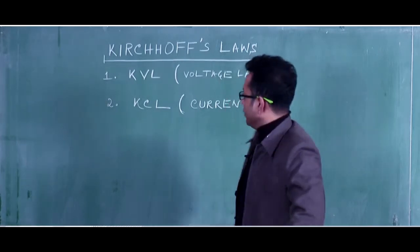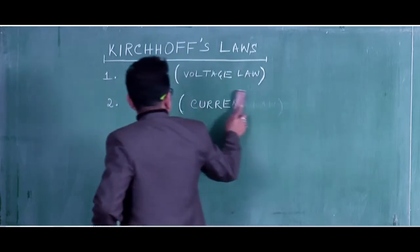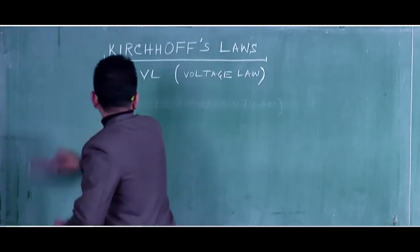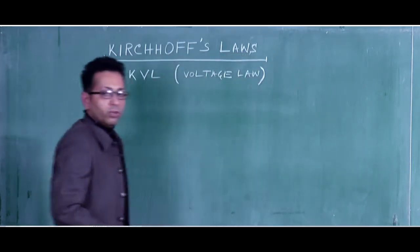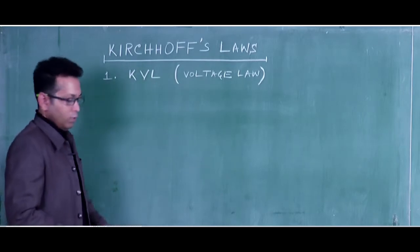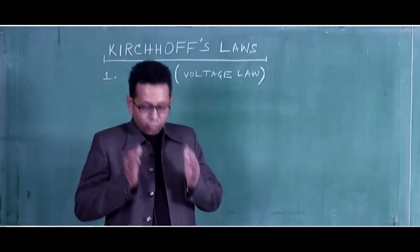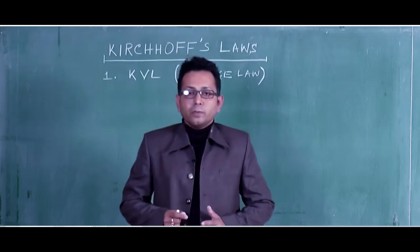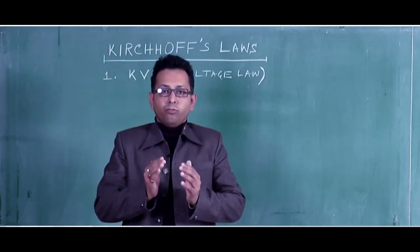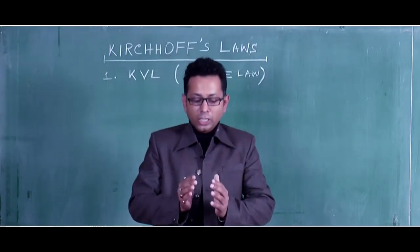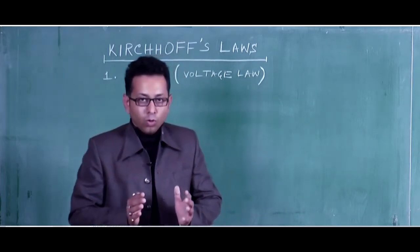So let us start with the KVL. According to KVL — Kirchhoff's voltage law — the statement can be given as: the sum of all the voltages in a particular loop will be zero.